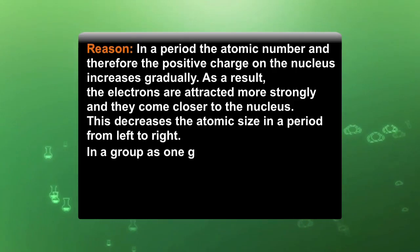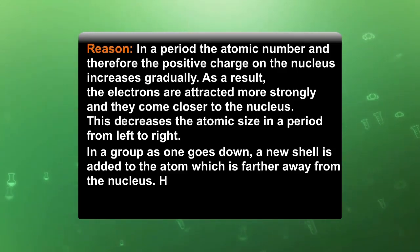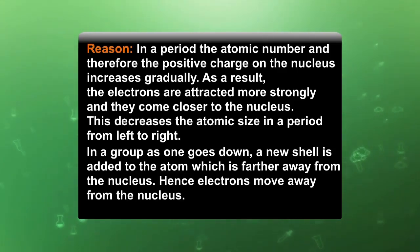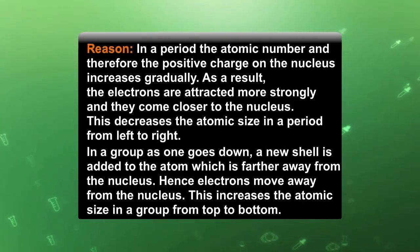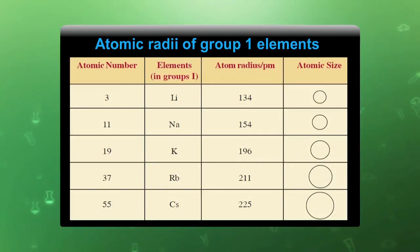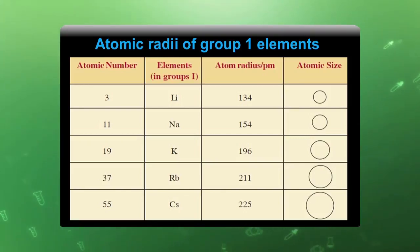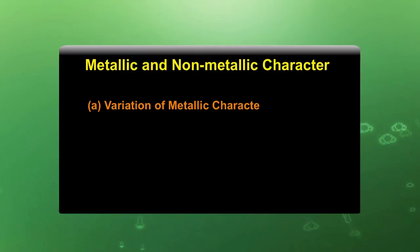In a group, as one goes down, a new shell is added to the atom which is further away from the nucleus. Hence, electrons move away from the nucleus, increasing the atomic size from top to bottom in a group. This table shows the regular increase of atomic size of elements in group 1 from lithium to cesium, confirming that as we move from lithium to cesium, atomic size increases due to a regular increase in the number of shells.